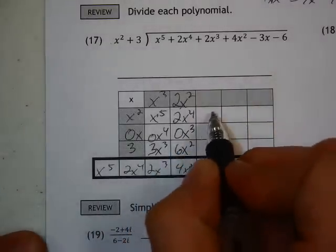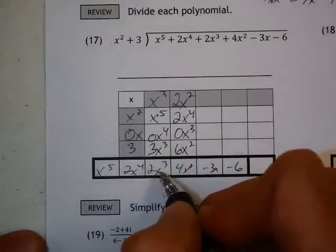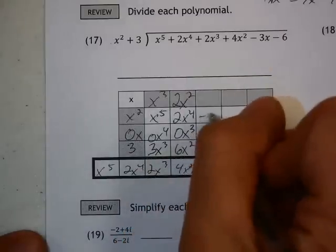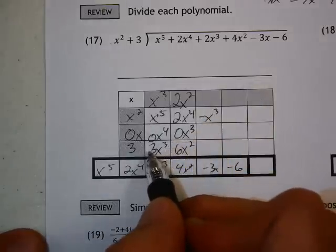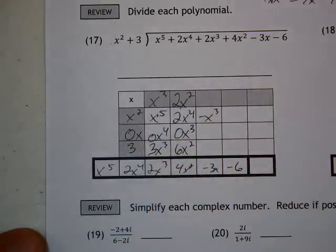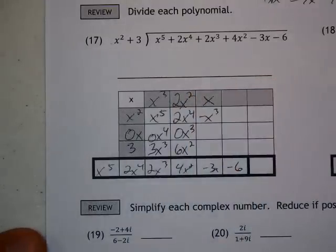Now, all these three have to add up to 2x to the 3rd, which means I have negative x to the 3rd. So, negative x to the 3rd plus 0 plus 3x to the 3rd is 2x to the 3rd, which means that this has to be negative x.